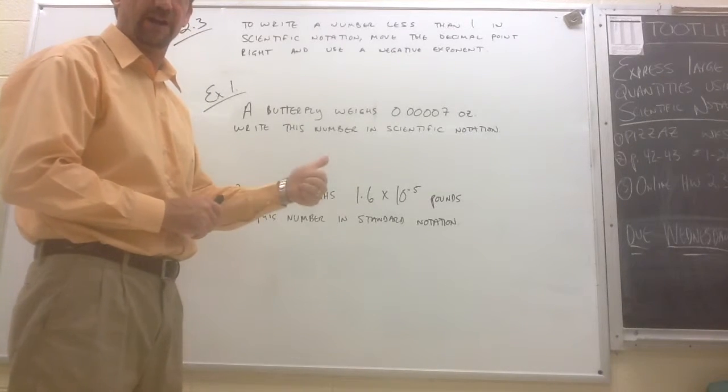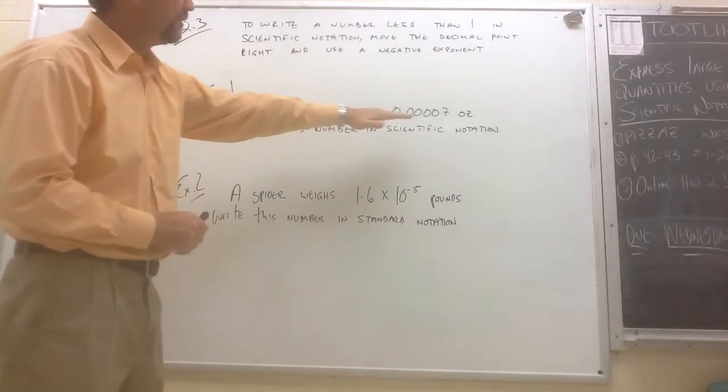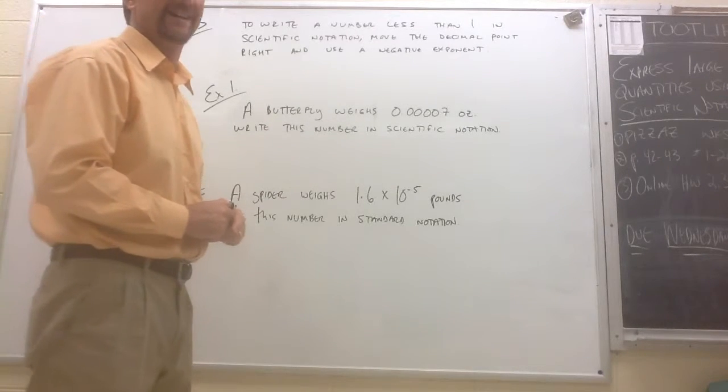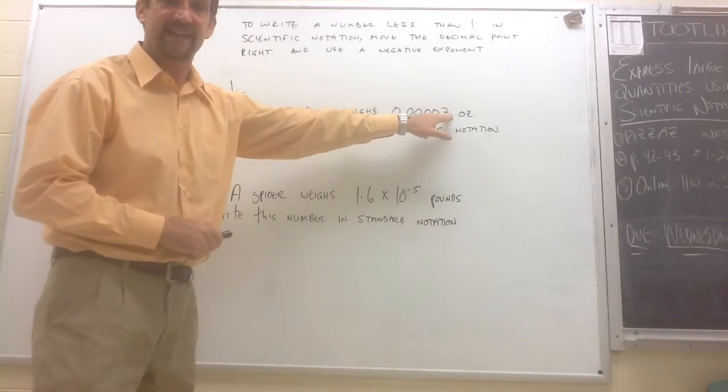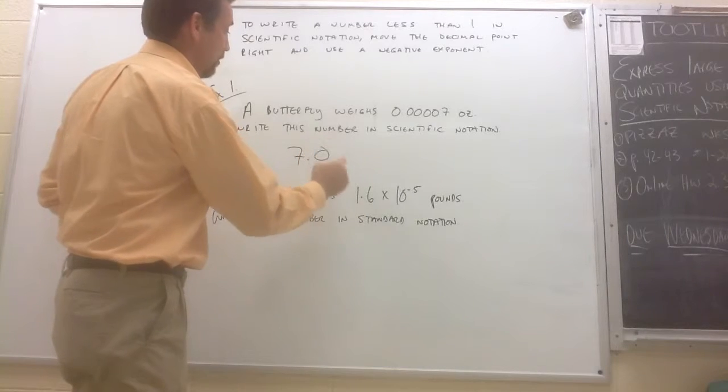So where would we move the decimal to come up with a number that's greater than or equal to one and less than ten? Hopefully you're saying behind the seven. That's where it has to go. So we would have 7.0.